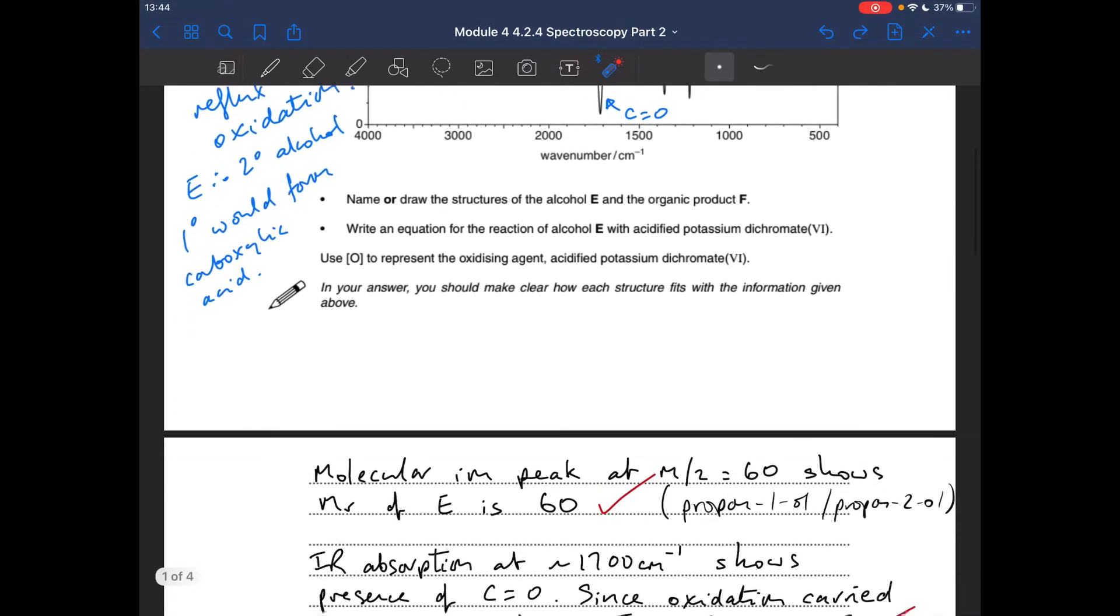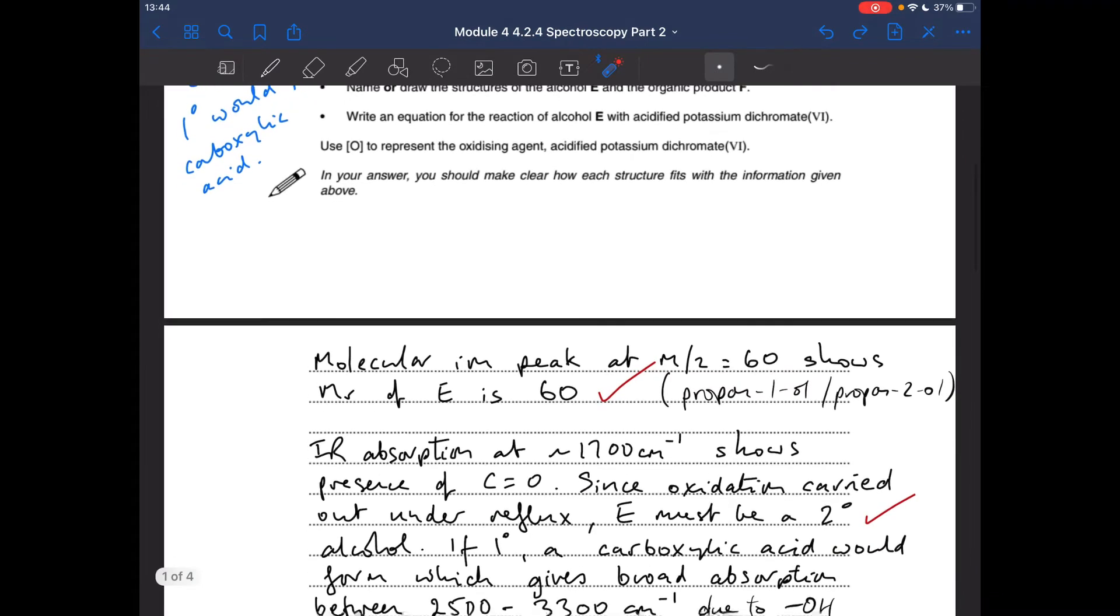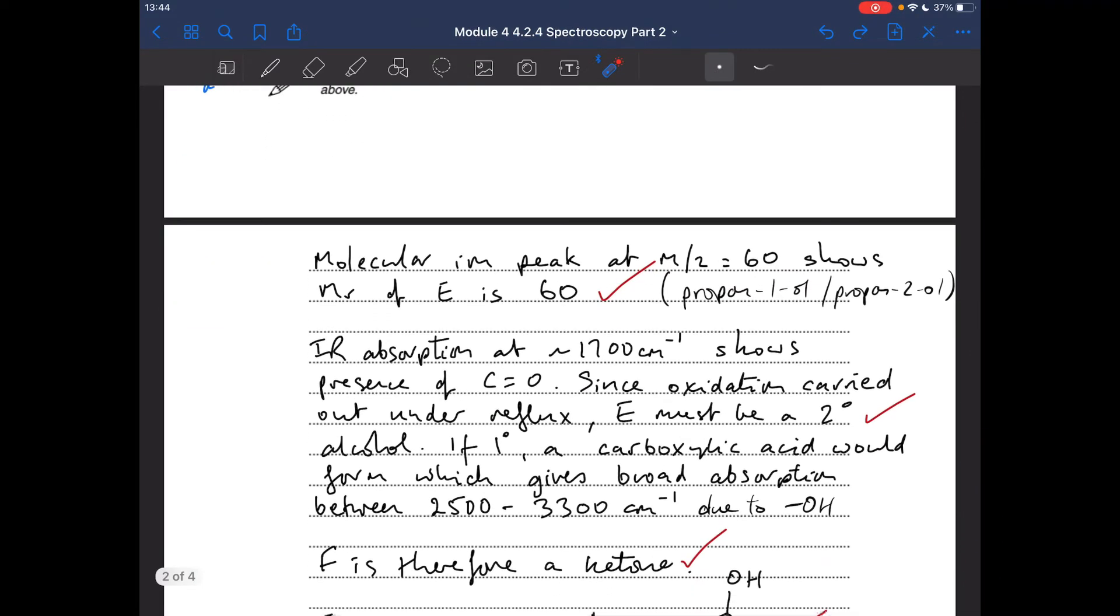Okay. So the answer. So what I'm saying is the molecular ion peak at M/Z 60 shows that the MR of E is 60. So I'm narrowed down now to just propan-1-ol or propan-2-ol.